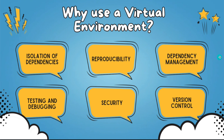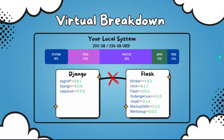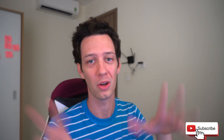Now let's look at another key concept. Imagine up top you have your local system — I'm on a Mac with 256 gigabytes, and I've used 200. With all my files, photos, and apps, I'm only left with 10 percent free space on my local system. Now imagine if you install every package globally — Flask, Django, all these big frameworks — that's just taking away space on your local system.